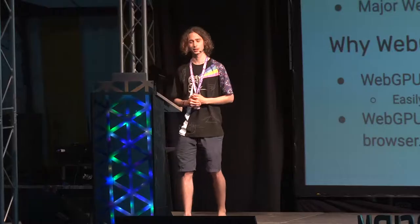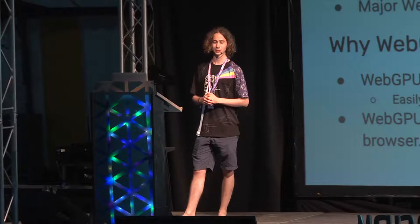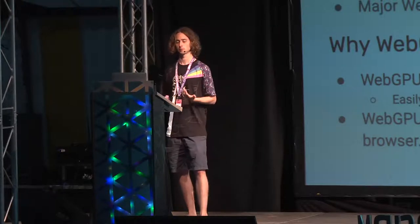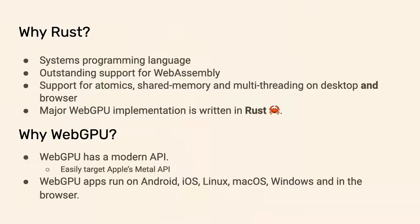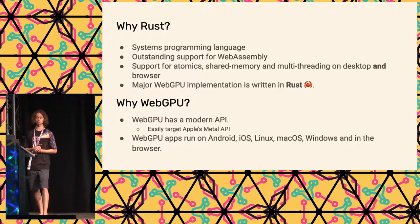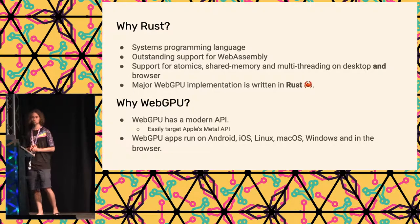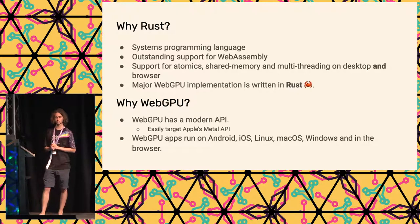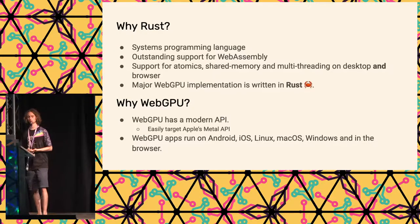Why Rust? It's not only because it's a great language. It's also because it's a systems programming language, and programming graphics basically requires a systems programming language — it's just much more convenient. It also has outstanding support for WebAssembly, so it works quite nicely out of the box. And it already has support for atomics, shared memory, and multi-threading on desktop but also in a browser. This is something which would be quite difficult to achieve with C++, but with Rust it's just very easy. Also, this major WebGPU implementation, WGPU, is written in Rust.